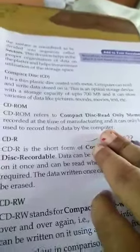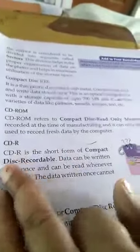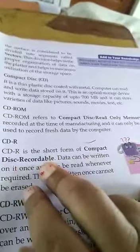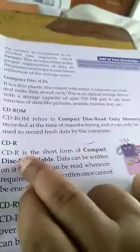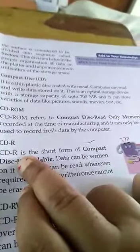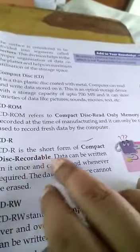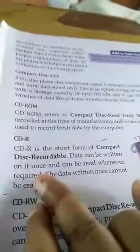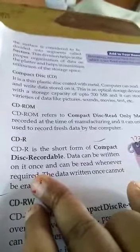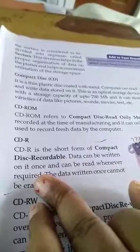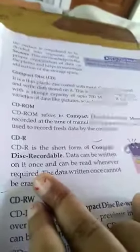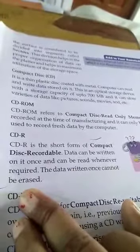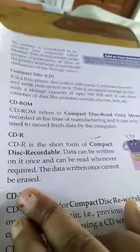CD-R is the short form of Compact Disc Recordable. Data can be written on it once and can be read whenever required. The data written once cannot be erased.